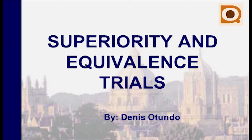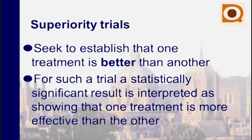Welcome to this screencast. We will be looking at superiority and equivalence trials, which are two different kinds of trials. For superiority trials, it basically aims at seeking to establish that one treatment is better than the other. The sample size is set so that there is very high statistical power to detect a clinically meaningful difference between the two treatments, and a statistically significant result is interpreted as showing that one treatment is more effective than the other.